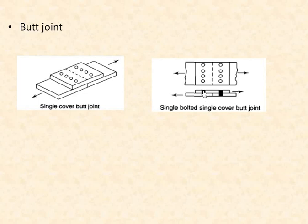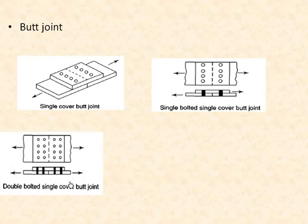In a single bolted single cover butt joint, one bolt line is used to connect each side of the cover plate to the main plates. If only one side were connected, the connection would be incomplete and may fail, so a row of bolts is provided on both sides — therefore it is called single bolted single cover butt joint. Next is double bolted single cover butt joint: here also a single cover plate is used, but at each portion two rows of bolts are used to connect the plates, hence double bolted single cover butt joint.